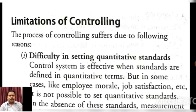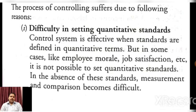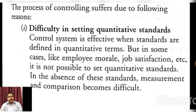Let's discuss. The process of controlling suffers due to the following reasons. The first one: difficulty in setting quantitative standard. It is very important to decide how we will set the standard in quantitative form. This is not possible in some cases — like employee morale and job satisfaction — where it is not possible to set a quantitative standard. In the absence of these standards, measurement and comparison become difficult.